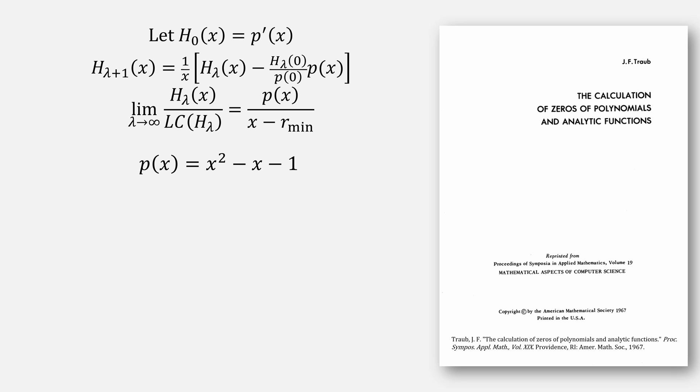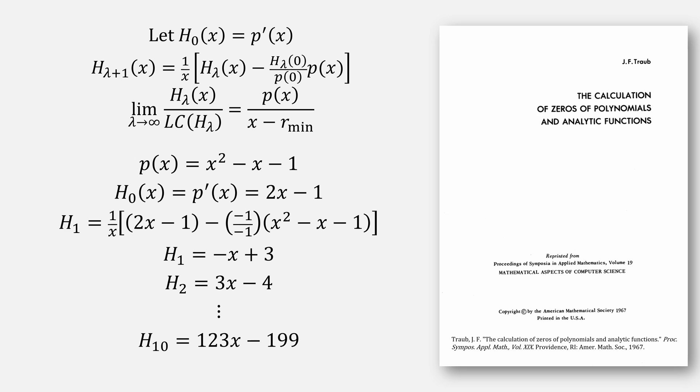Starting from our example polynomial of x squared minus x minus 1, finding our first value for h, which is, again, its derivative of 2x minus 1. Plugging everything into our equation for h1, we get our next value for h is negative x plus 3. Repeat the process, h2 is 3x minus 4. Keep going and we'll stop at h sub 10 of 123x minus 199.